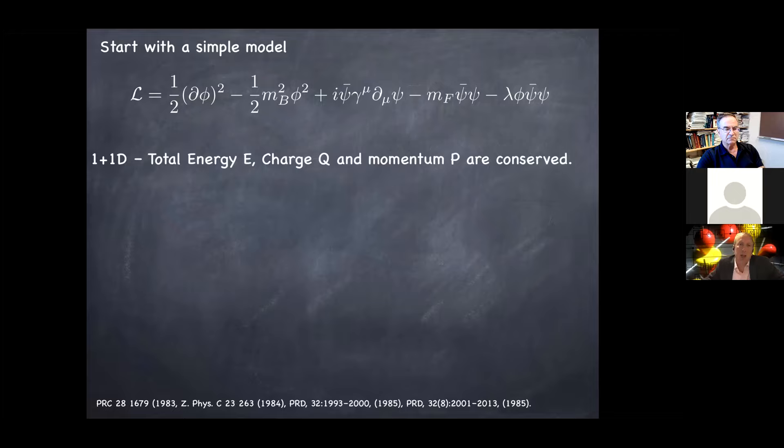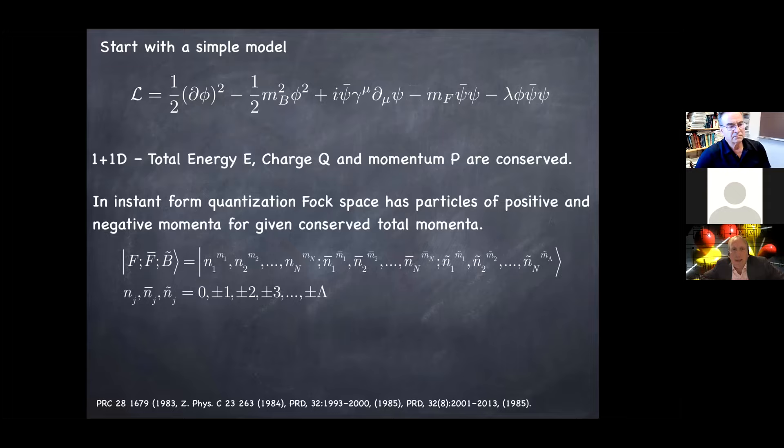So this is called a massive Yukawa model because the bosons, which you should think of as things like photons, have a mass. So this is just a toy, but just so that we can talk about a definite model. So now if we quantize this, what we find is the total energy, charge, and momentum are conserved. So charge conservation just comes from the Dirac part of the Lagrangian. So that follows exactly through. And so then if we think about quantizing in an instant form, if I do a conventional quantization, we're going to get a Fock space, which has occupations of momentum states for the fermions, the anti-fermions, and the bosons, which we write down in this slightly opaque notation. So let me just take a minute and go over this.